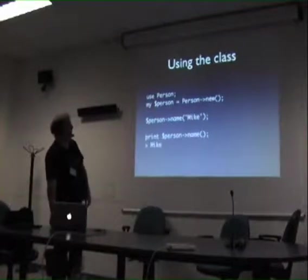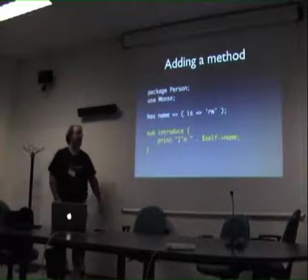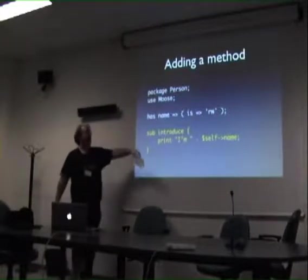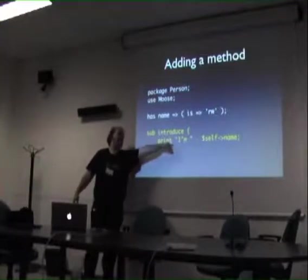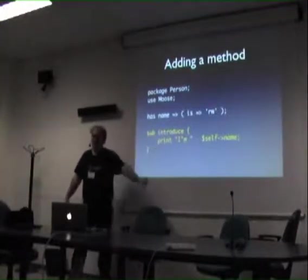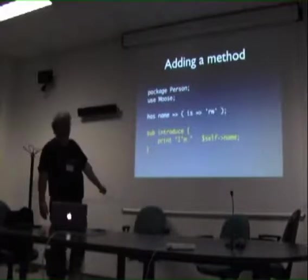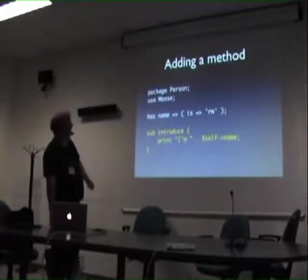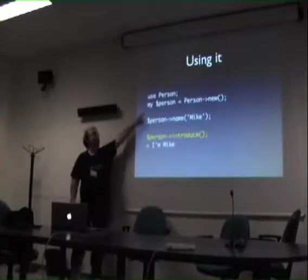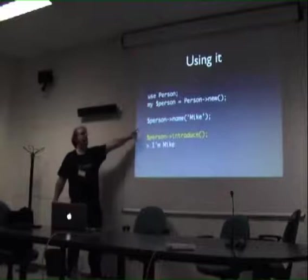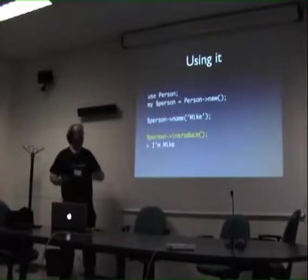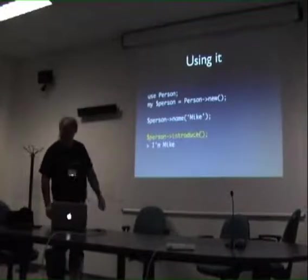We can have a method. Methods look just like they do anywhere else - `sub`, and there should be a `my $self = shift` there. Further on in this slide deck you'll find ways around having to do that. So, here's your example: `my $person = Person->new`, `$person->name('Mike')`, and then `$person->introduce` says 'I'm Mike'. Brilliant.